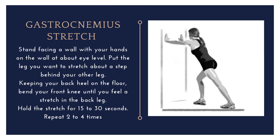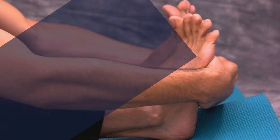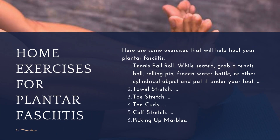To perform the gastrocnemius stretch, stand facing a wall with your hands on the wall at about shoulder height. Place the leg you want to stretch about a step behind your other leg. Keep your back heel on the floor, bend your front knee, and you will feel a stretch in the back leg. Hold the stretch for 15 to 30 seconds and repeat two to four times a day.